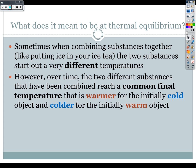So they kind of, one starts out, they both start out at different extremes, really cold and really hot, and then when they come together to that thermal equilibrium, they are warmer than the initially cold object, but colder than the initially warm object.